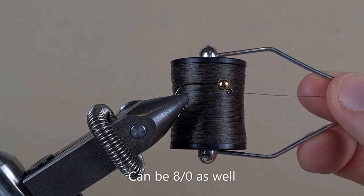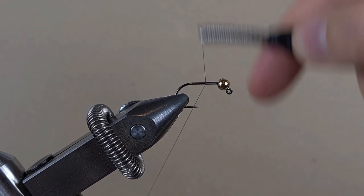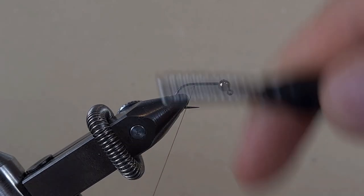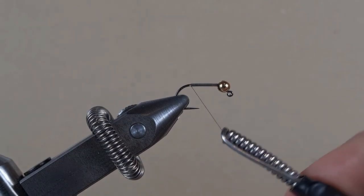We're going to use brown thread in 6-0. Then we'll bring the thread to the bead.